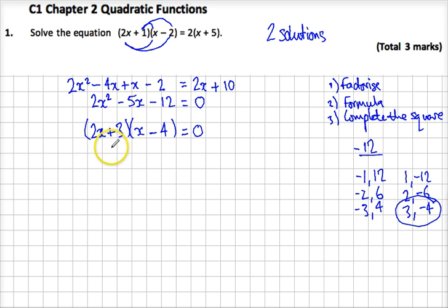And once we've got that, that's quite easy. We've got two things multiplied to make 0. So either I know that the first bracket is 0, or the second bracket is 0. So therefore, from this one, I know that x is minus 3 over 2, or from this one, x is 4.